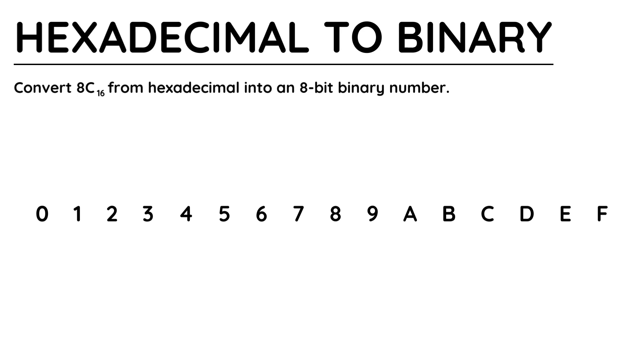Hexadecimal uses 0 to 9, just like the denary system, and then A to F. Hexadecimal only uses single digit numbers, so 10 is converted into A, 11 becomes B, up to 15, which is turned into F.